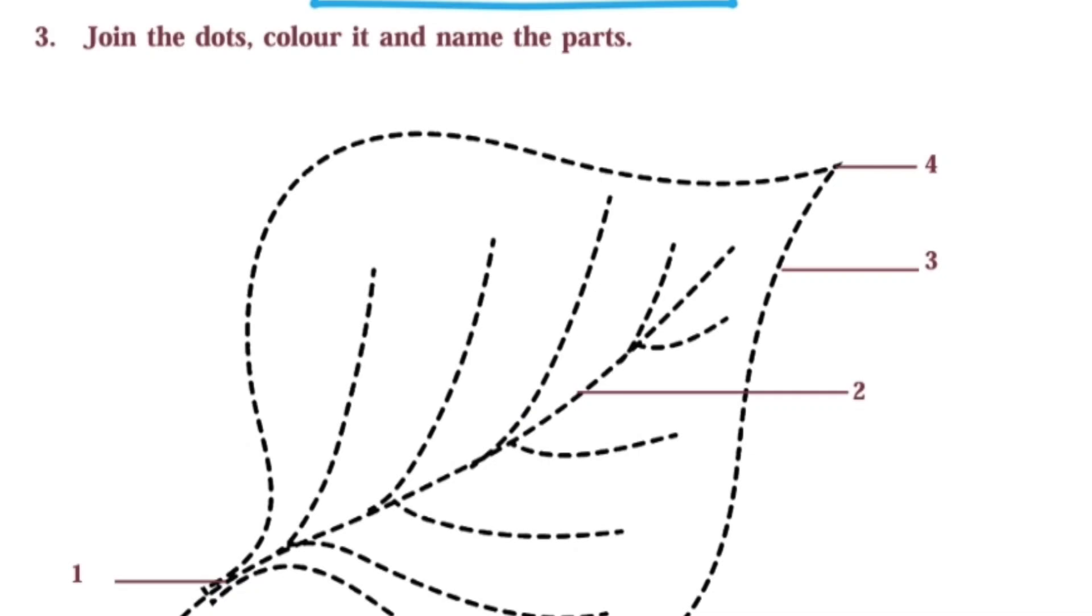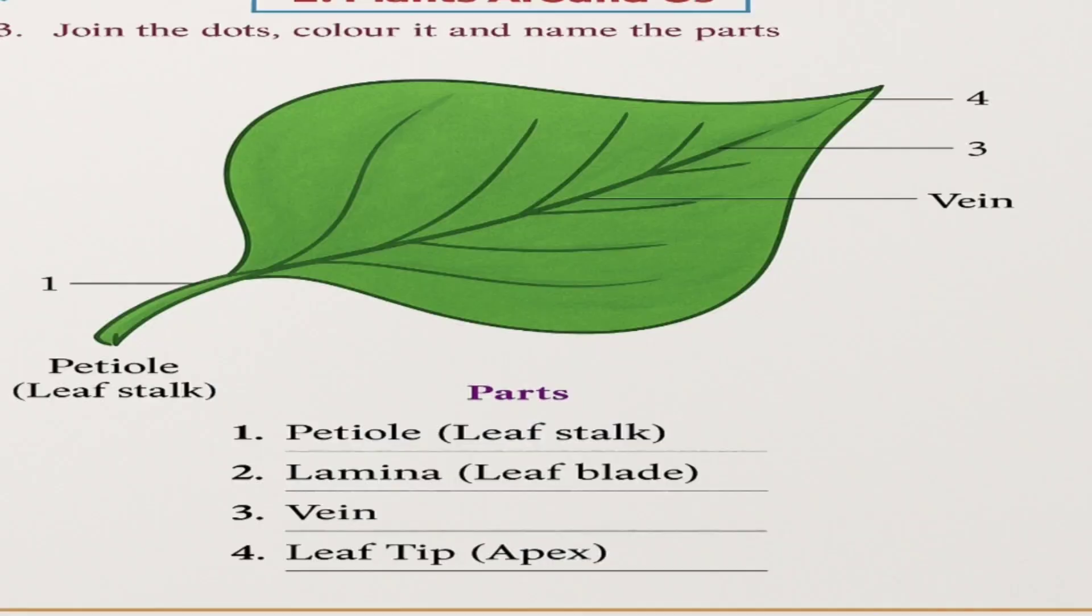Next one: Join the dots, color it and name the parts. Here we have to join the dots first and have to color it and name the dots. Here first one parts of the leaf: first one petiole, second one lamina, third one vein, last one leaf tip.